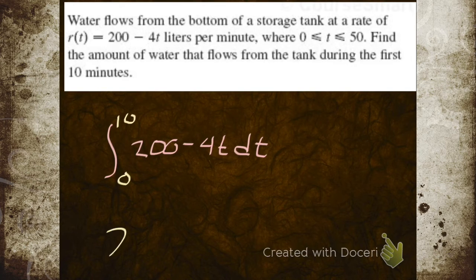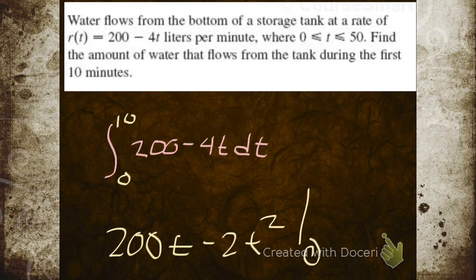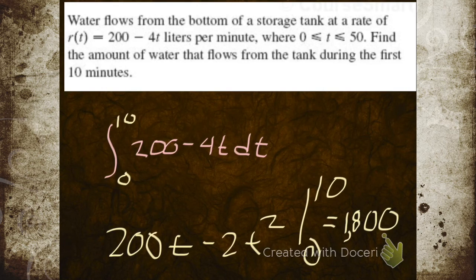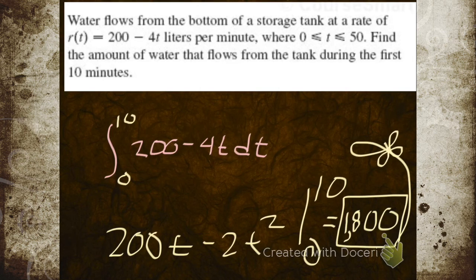Boom, here we are. 200t minus 2t squared from zero to 10. I'm out of room down there. That's 2,000 minus 10 times 10 is 200. And we're... What are my units? Liters.